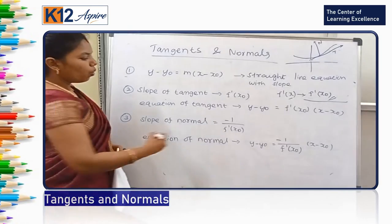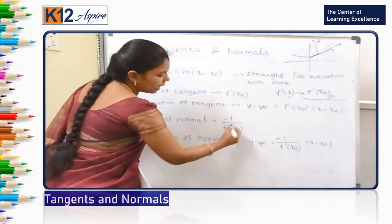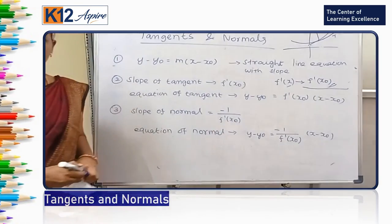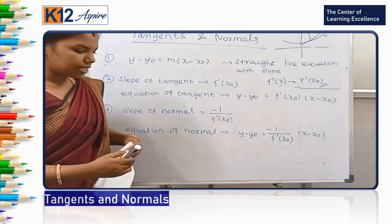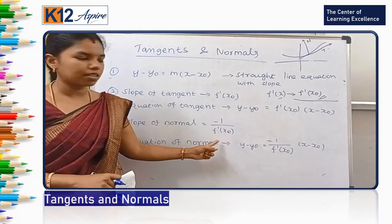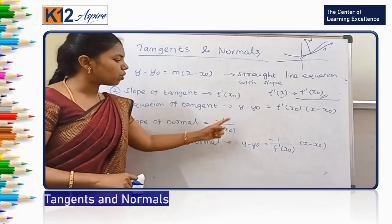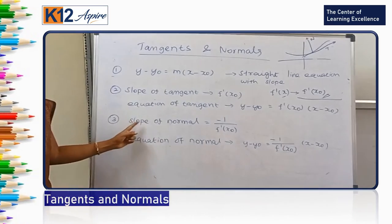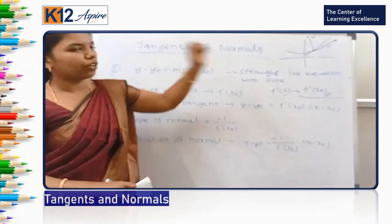What about normal? The slope is minus 1 by f'(x₀). First you have to find f'(x). Then you substitute the point value in f'(x₀). Then minus 1 of that value is the slope of normal at that particular point.